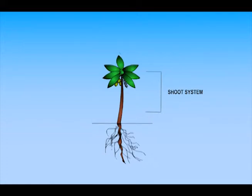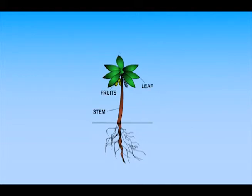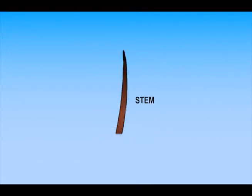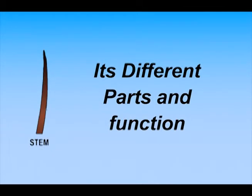Shoot system includes stem, leaf, fruits, flowers. In this video, we will discuss about stem, its different parts, and functions.